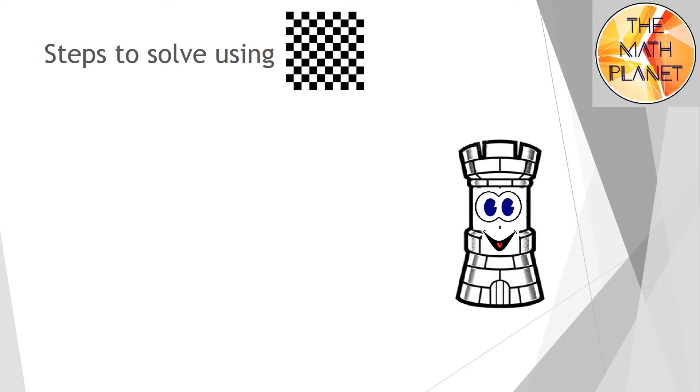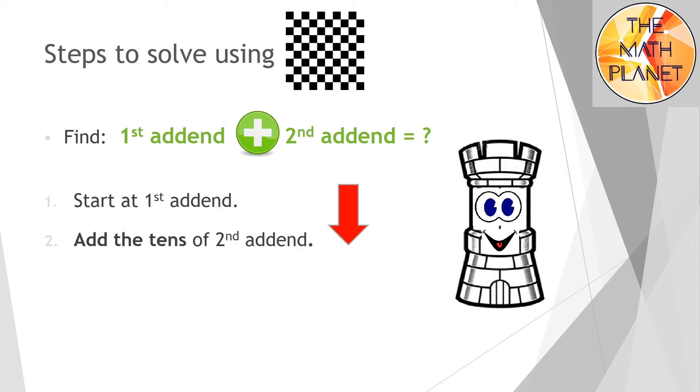So the steps to solve using a hundred chart are as follows. To find the answer for this addition equation, I'll start at the first addend. Then I will add the tens of the second addend by moving down the chart. I'll add the ones of the second addend by moving to the right of the chart. Finally, the destination will be the sum.